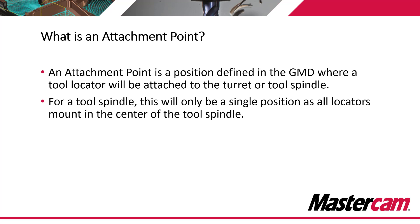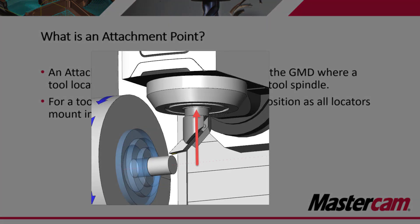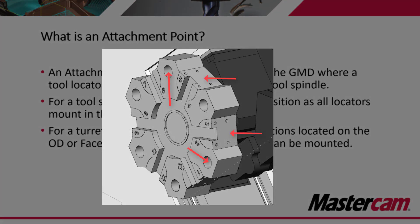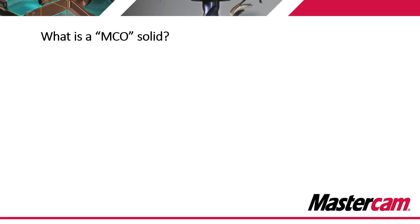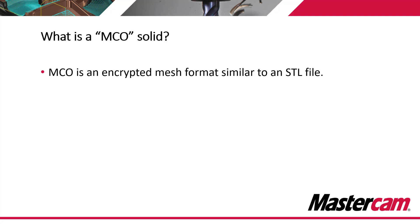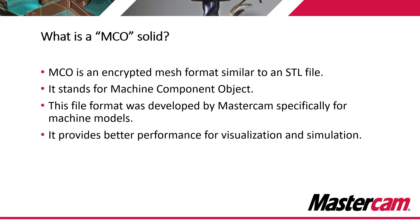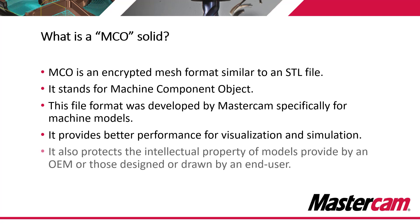For a tool spindle, this will only be a single position as all locators on a B axis head style machine are going to mount into the center of the tool spindle. For a turret, there could be one or more positions located on the OD or the face of the turret where the tool locators can be mounted. MCO is an encrypted mesh format similar to an STL file — it stands for machine component object. This file format was developed by Mastercam specifically for machine models. It provides better performance for visualization and also the simulation process, and it protects the intellectual property of the models provided by an OEM or designed by an end user.